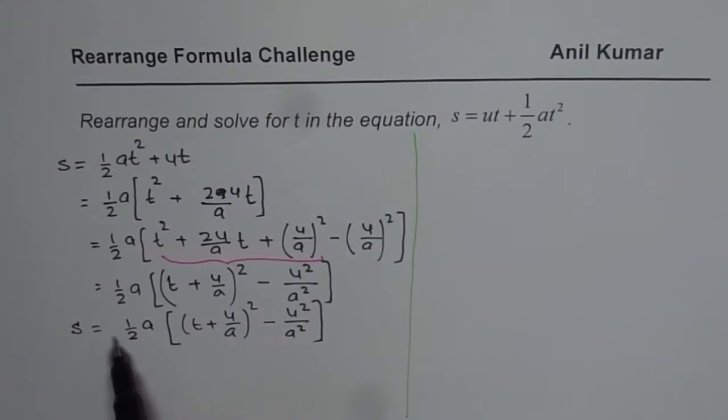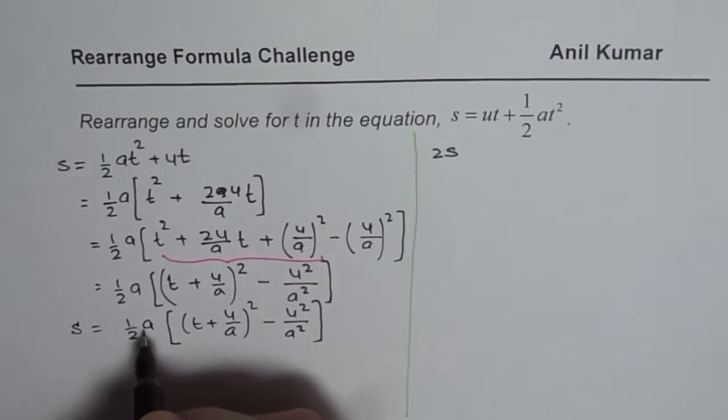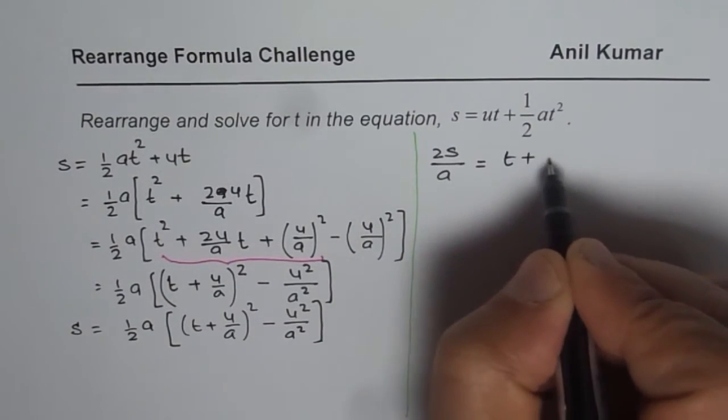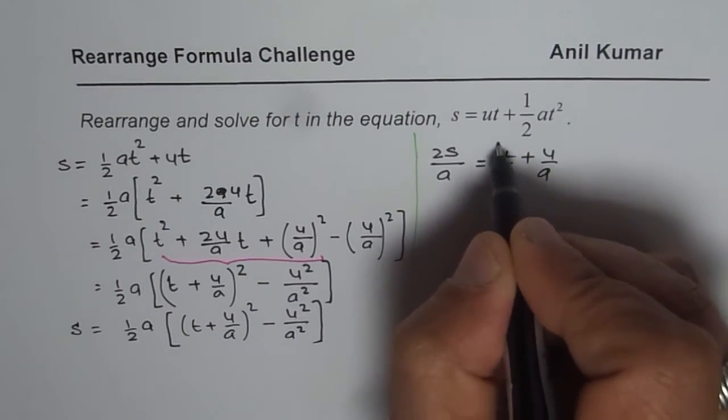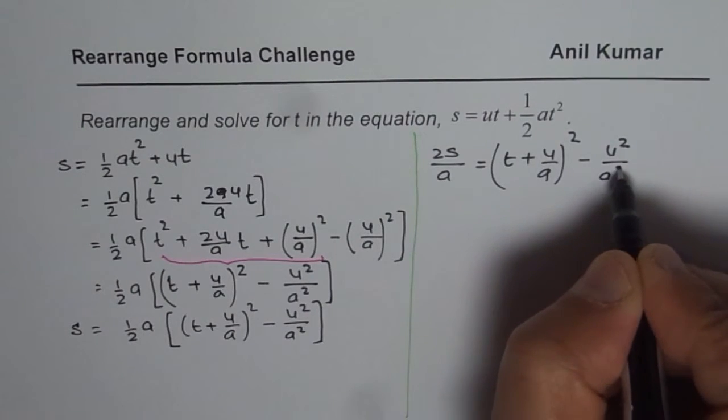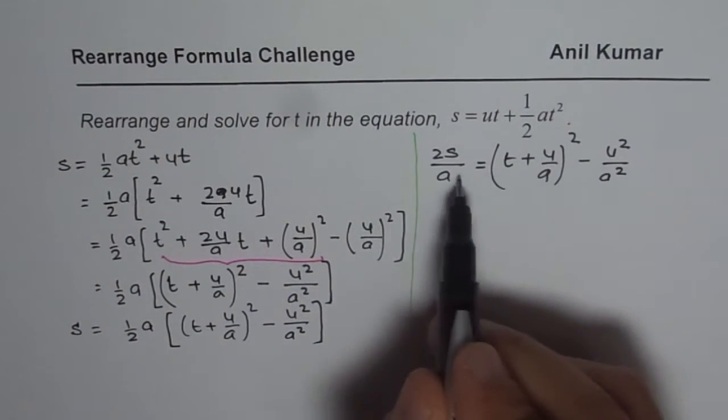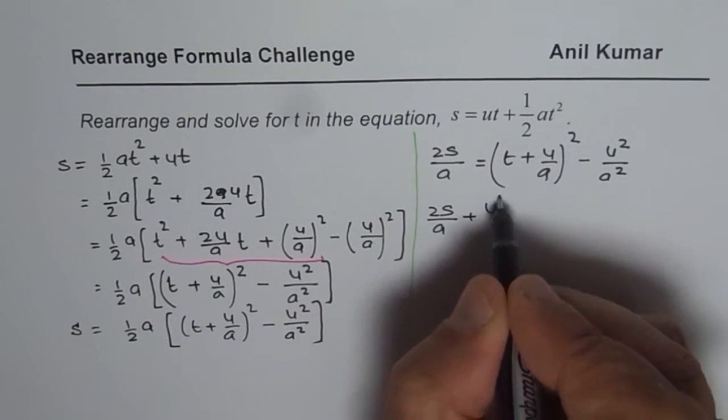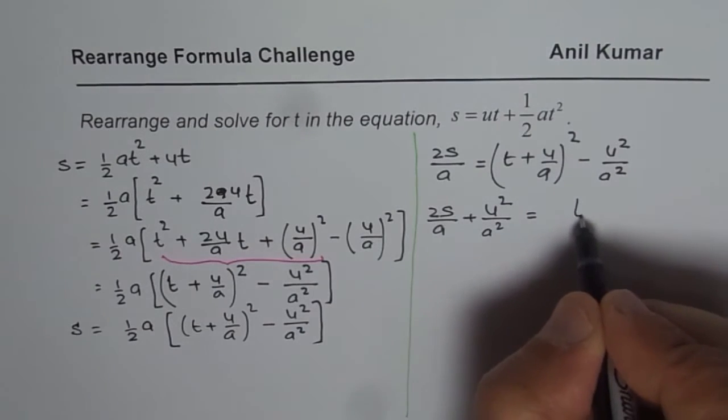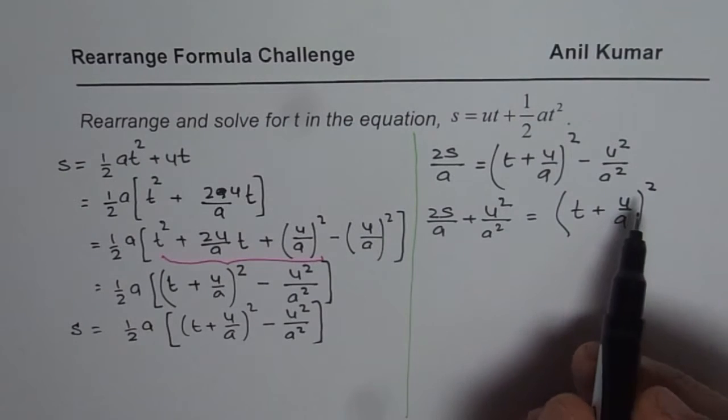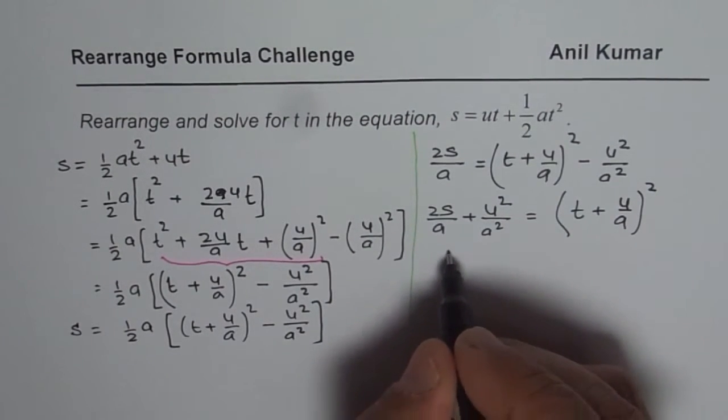So let us cross multiply. So we get 2s divided by a equals to t plus u over a whole square minus u square over a square. Now we will add this term on both the sides. So we get 2s over a plus u square over a square equals to t plus u over a whole square. So at this stage, we will square root. We will square root all this.